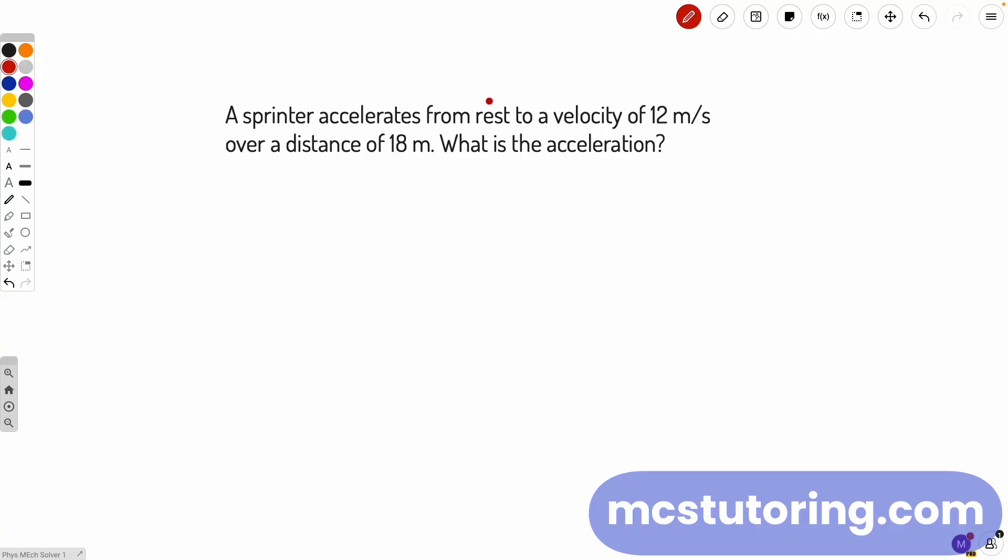A sprinter accelerates from rest, we'll call that V₀, to a velocity of 12 meters per second, we'll call that V or VF, over a distance of 18 meters, we'll call that S. What is the acceleration? We'll call that A.